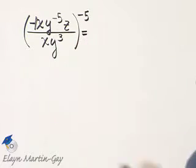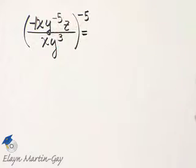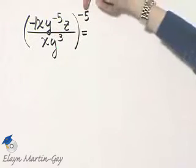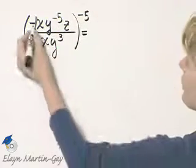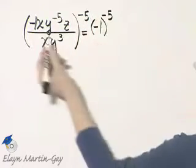So first, I'll use a power of a product in a quotient, and every single factor in the numerator and denominator is raised to this power. So I'll have negative 1 raised to the power of negative 5.